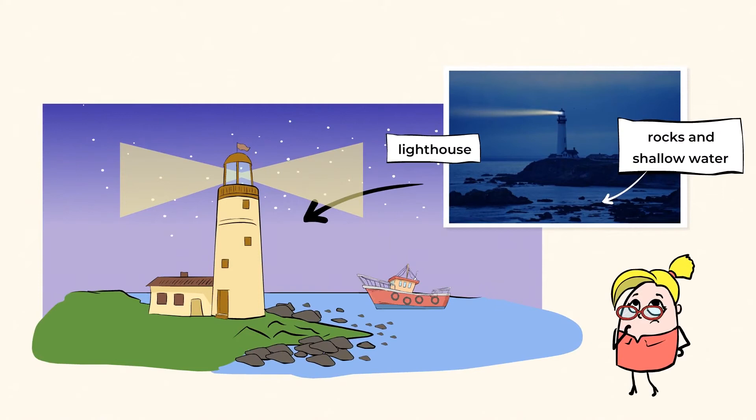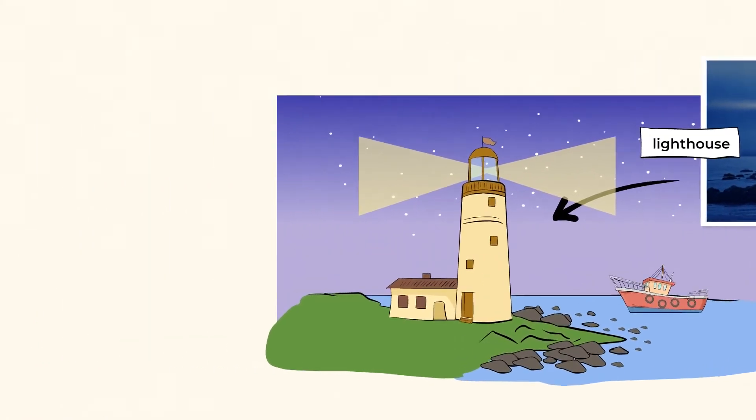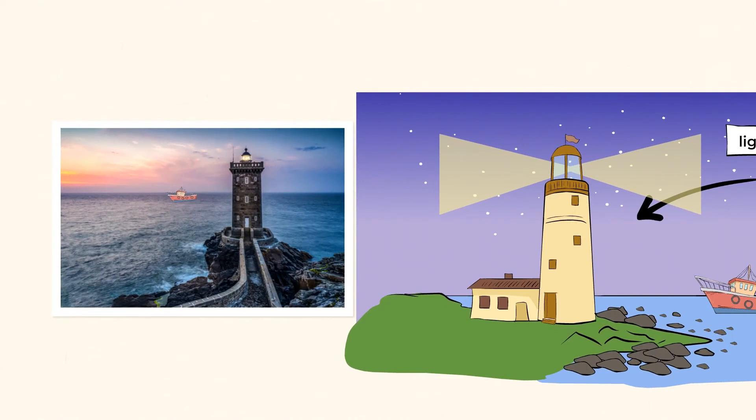It shines its light here to warn ships and boats that there are rocks and shallow water in this area. The light is communicating to the boat that they need to stay away from that part of the ocean. The light can be seen from far away, so boats all around are able to stay safe. What an amazing way to keep boats safe.